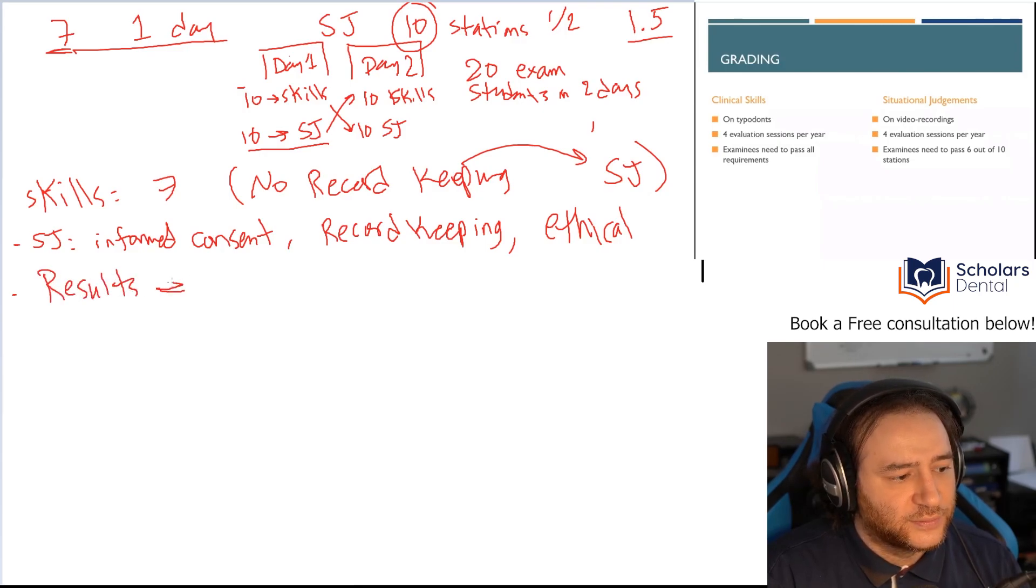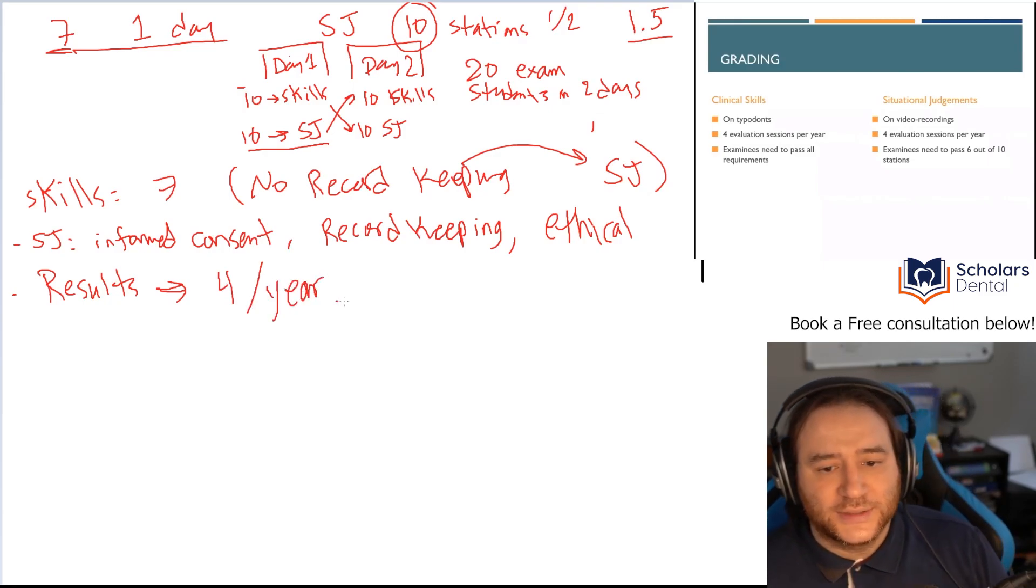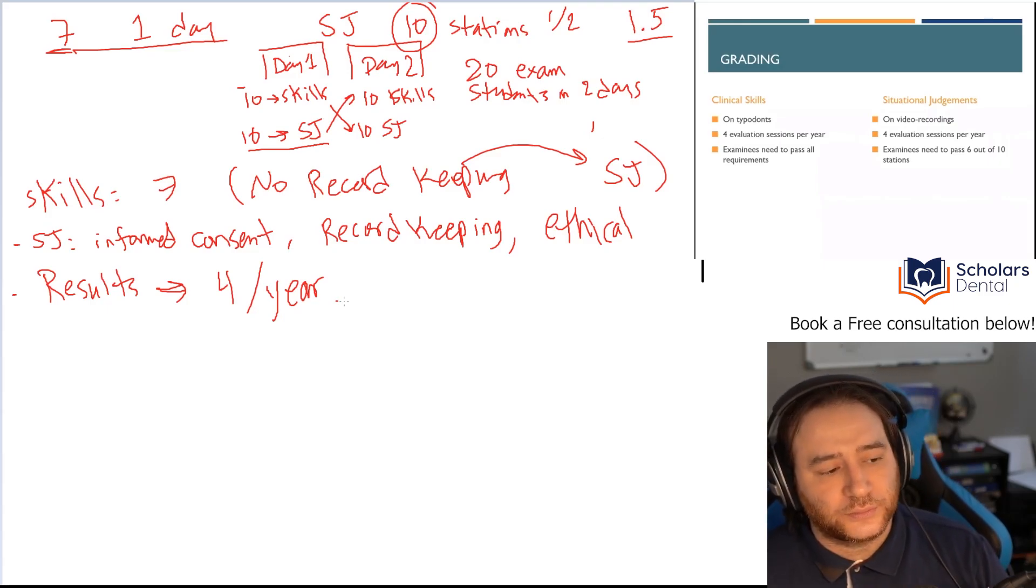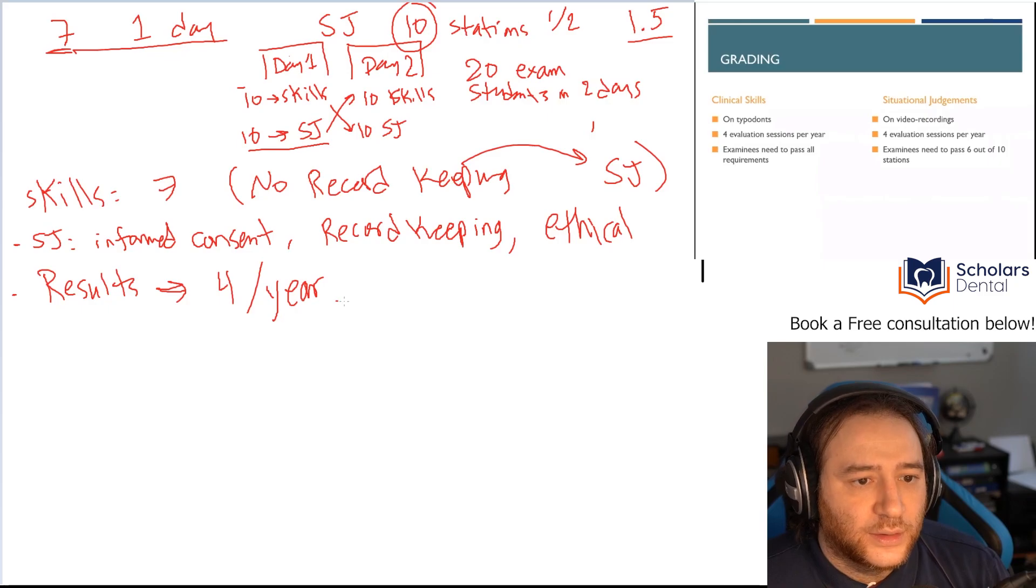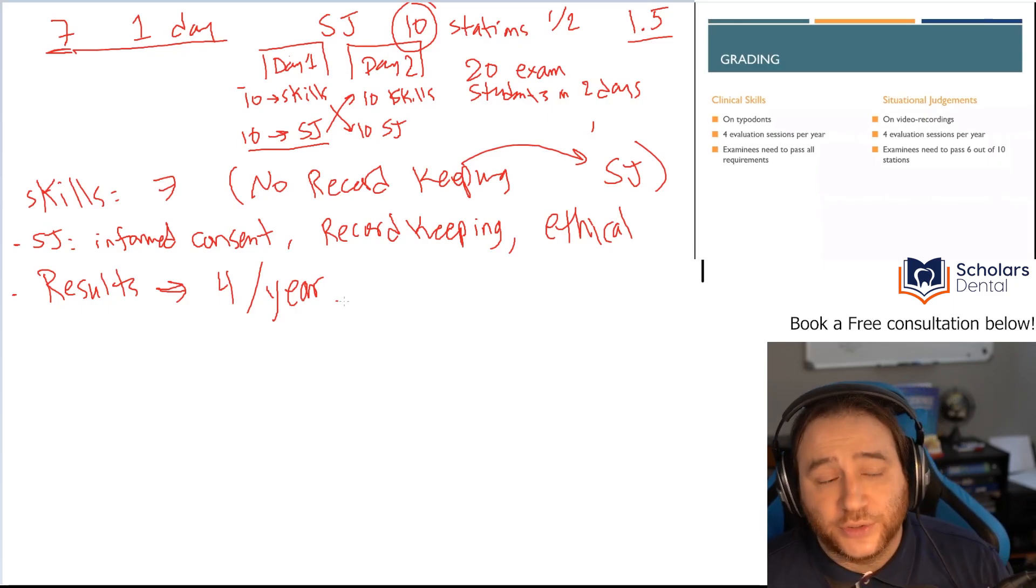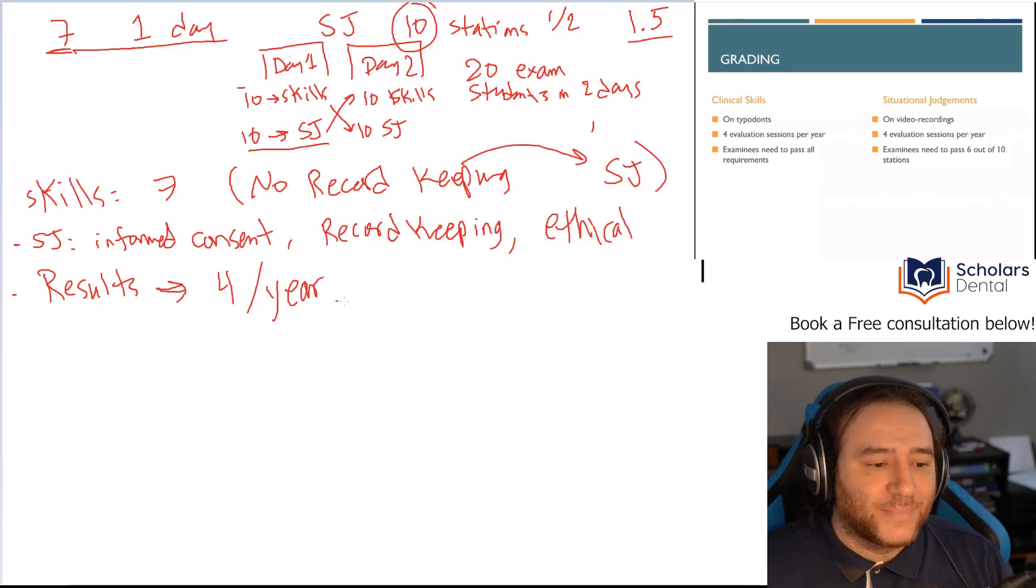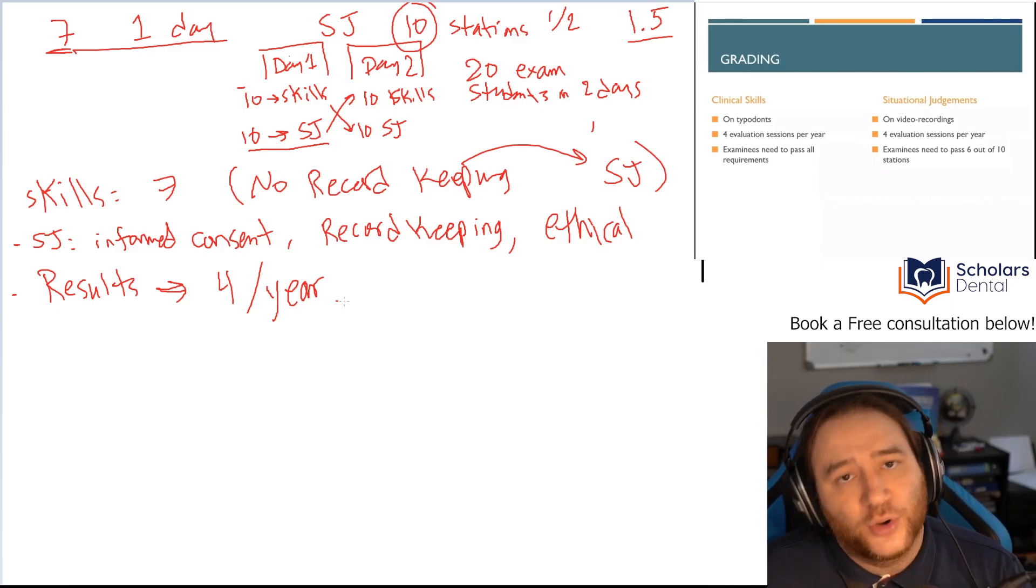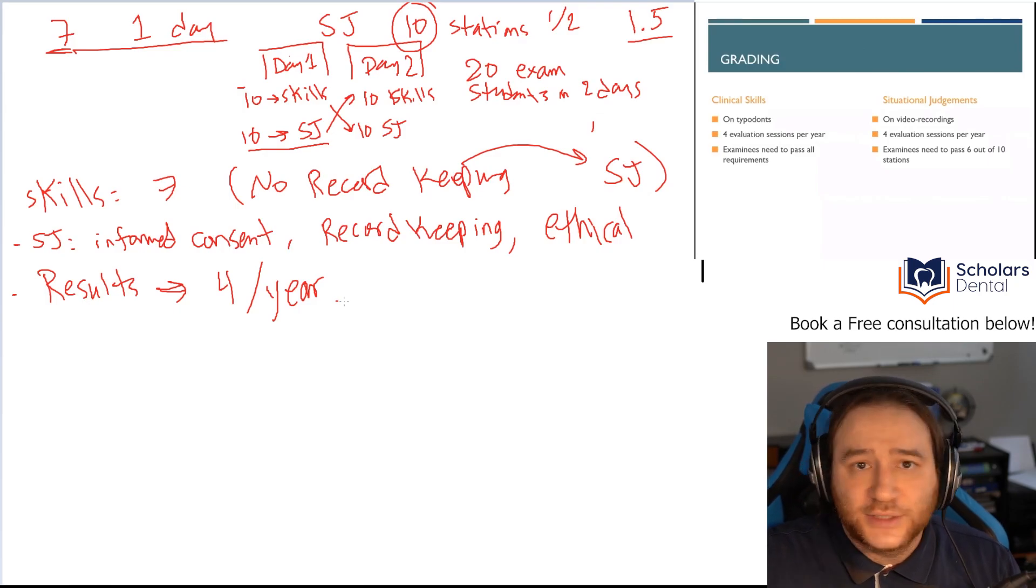First of all, the evaluation now, let's call it results. Results will be four times a year. That's a big point. Even though you have the opportunity to do the exam possibly every week, the results come out four times a year. Is it better? Yes. Is it absolutely amazing like you did the exam this week, you get the result at the end of the month? No. It's not in the best of the best. It's still better than what it was.